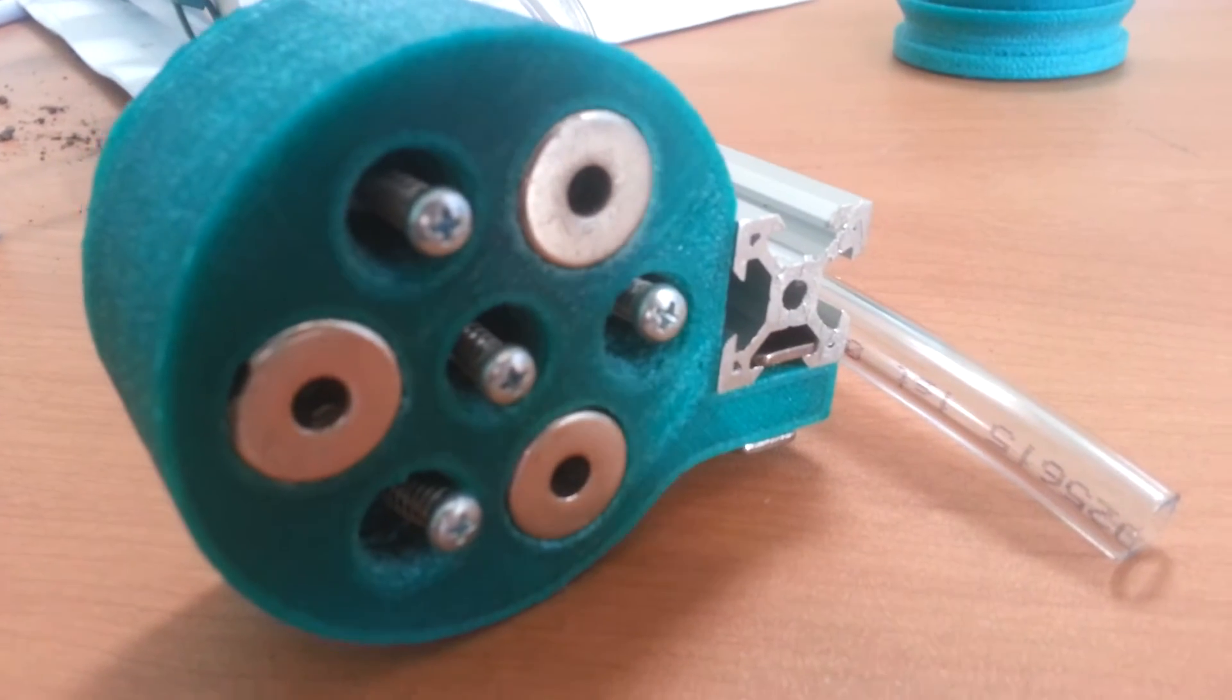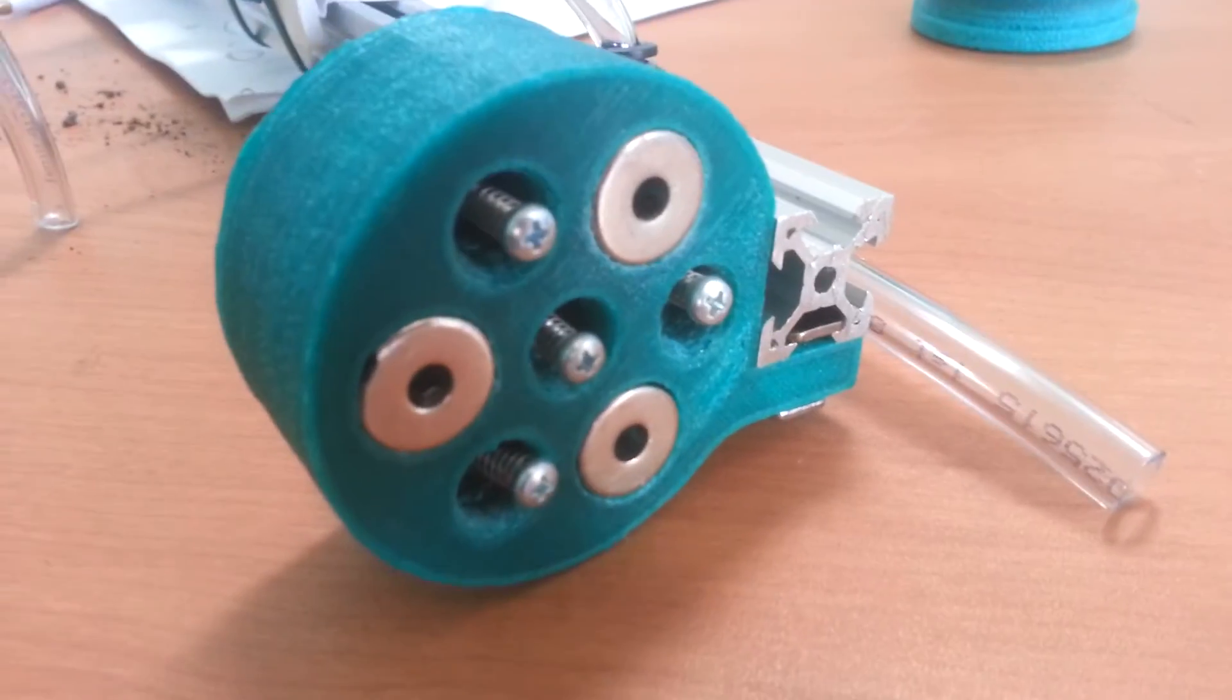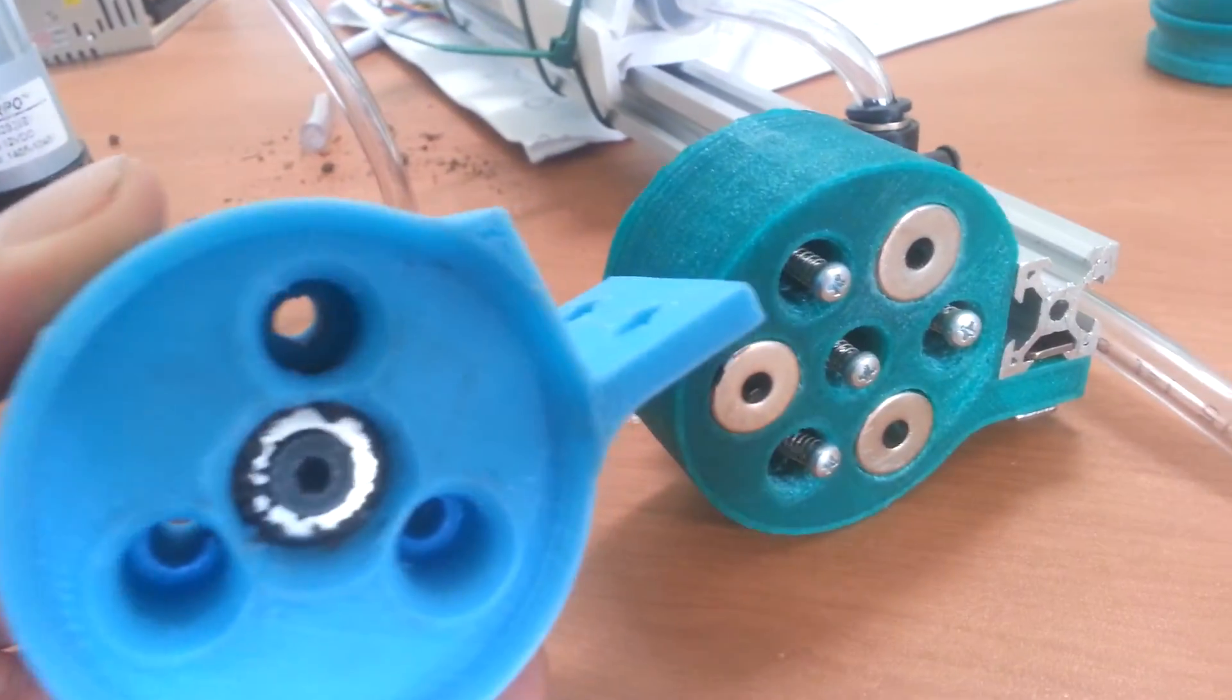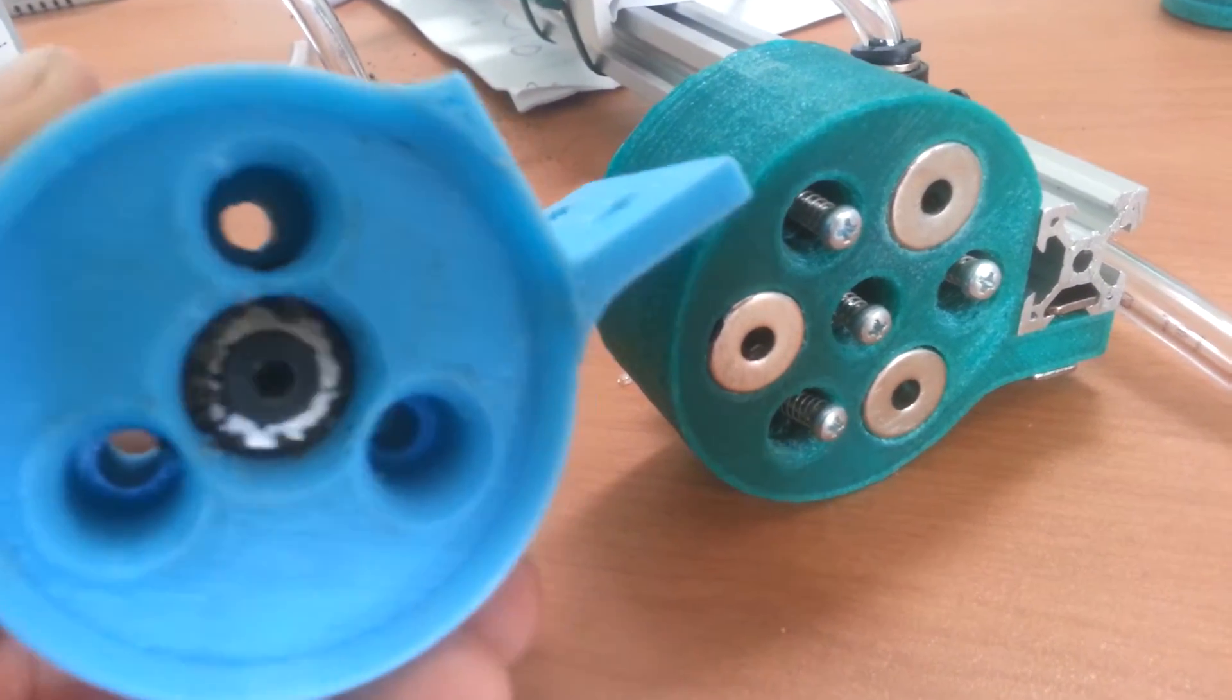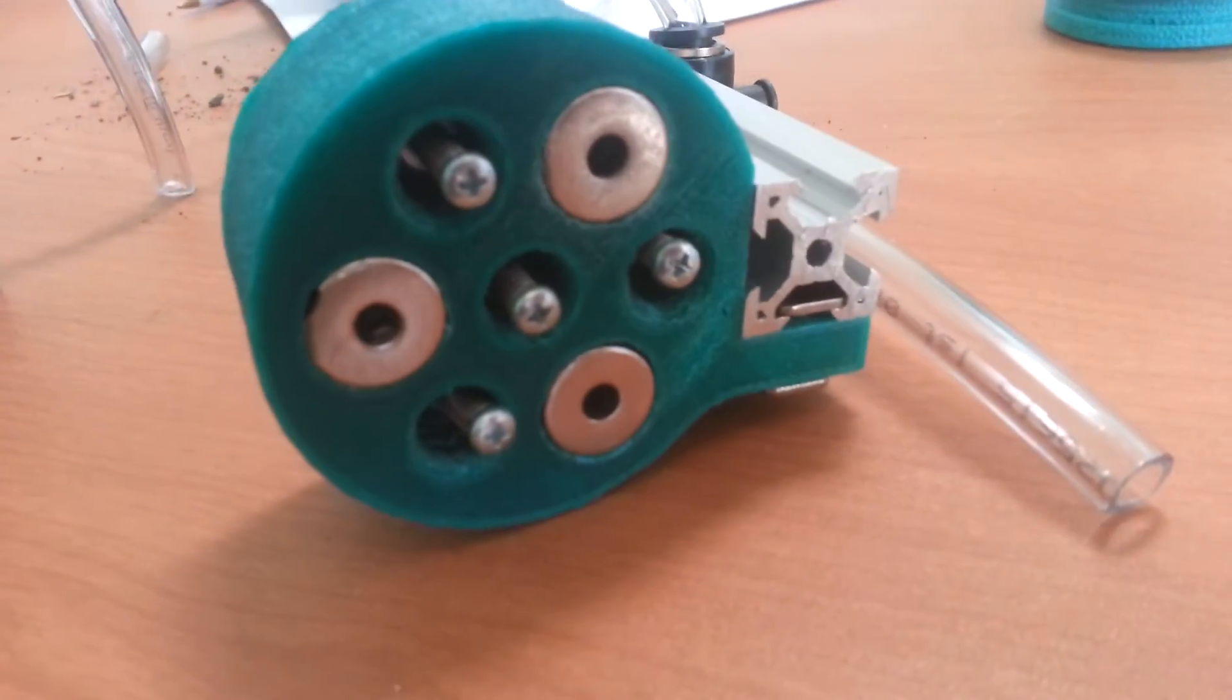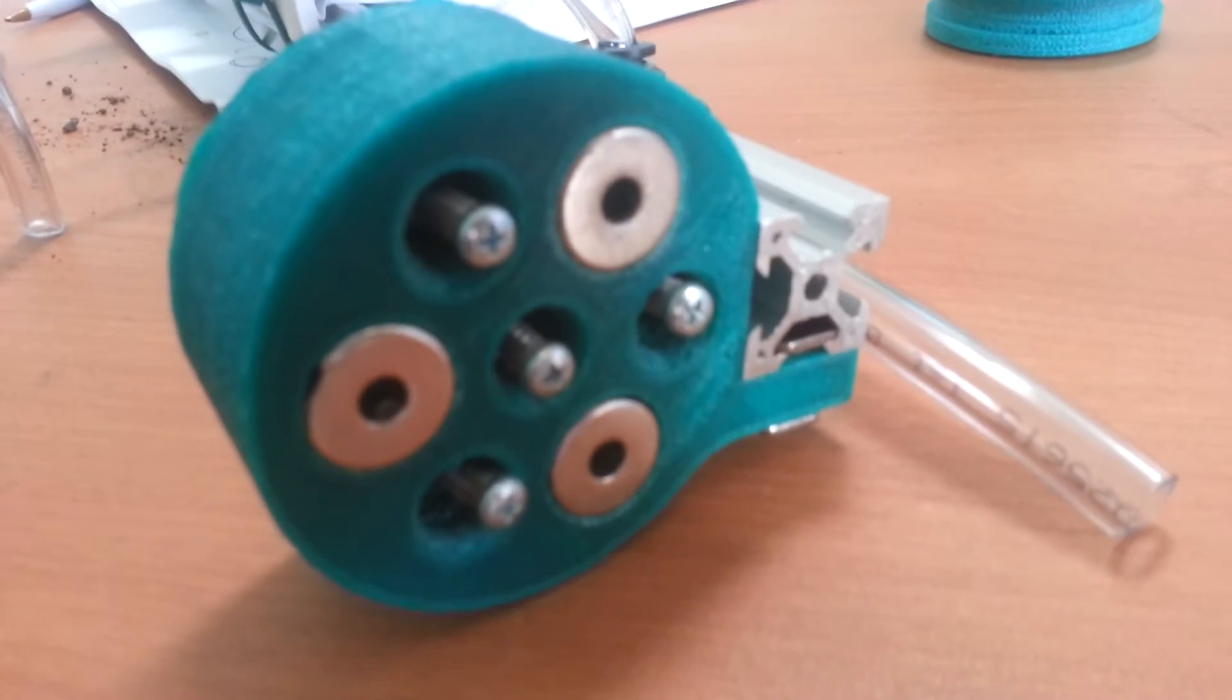So instead of having a single centralized magnet as with over here and then screws around the perimeter, we have three magnets around the perimeter. So that does a couple of things.